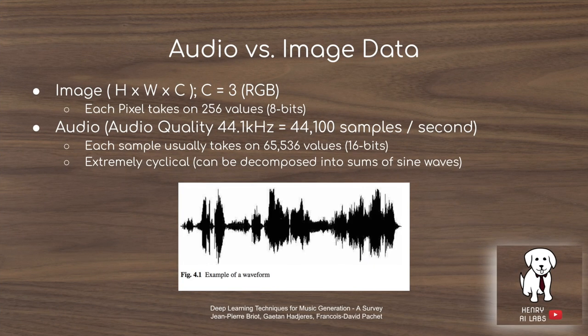Transitioning to audio data, the first question is: what is audio data? As data scientists, we're interested in the structure of data — how it's stored, what are the dimensions of the matrices, vectors, and tensors. An image is represented as a height-by-width-by-channels tensor, or just a matrix for grayscale. In the image matrices, each pixel takes on 256 values — 8-bit color.